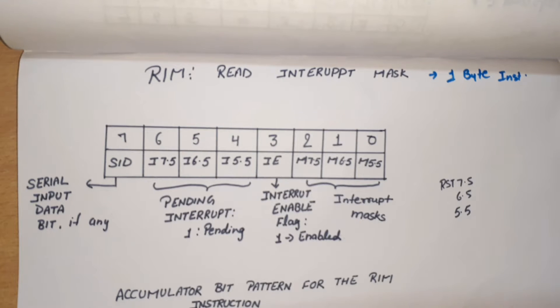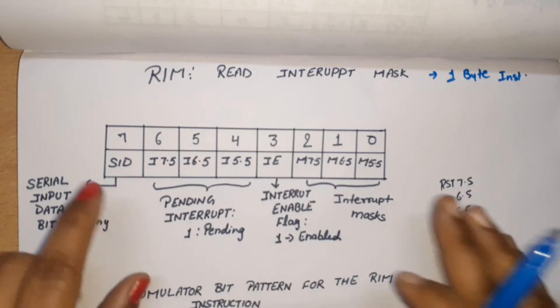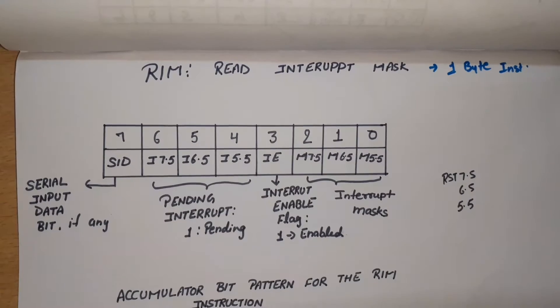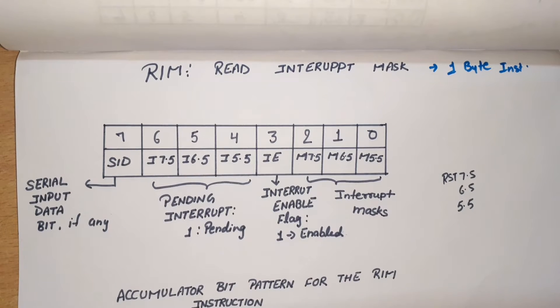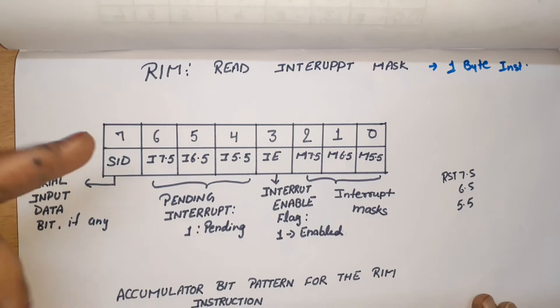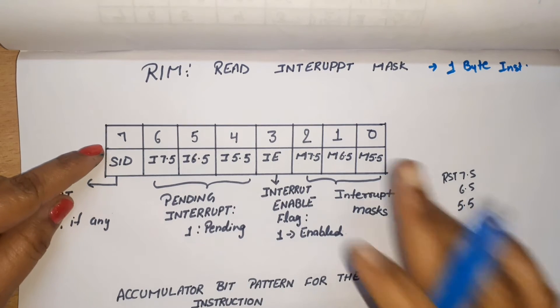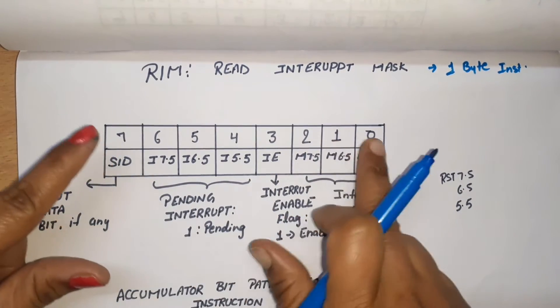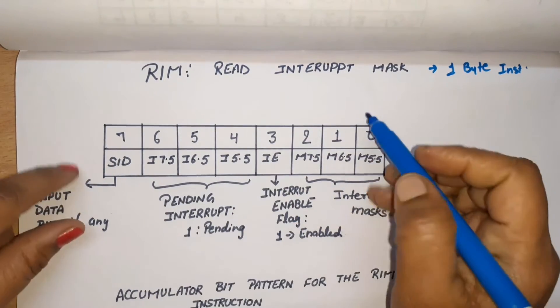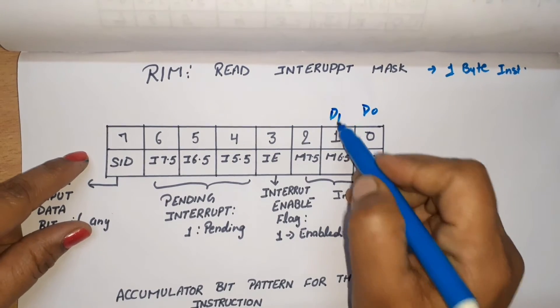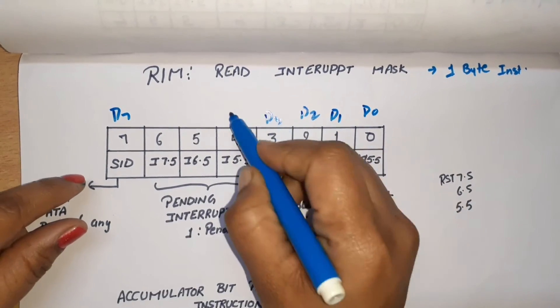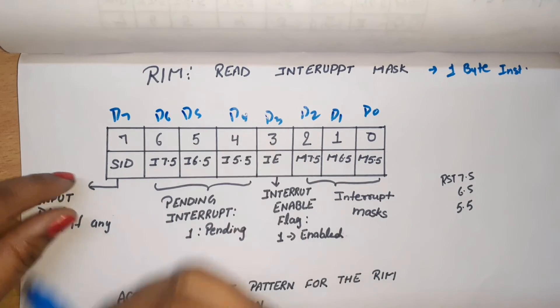I will explain all functions one by one. This is the content of the accumulator. When we write the RIM instruction in a program, RIM basically reads these contents. Starting with the MSB bit, the accumulator is an 8-bit register, so I have 8 bits: 0, 1, 2, 3, 4, 5, 6, 7. You can write D0, D1, D2, D3, D4, D5, D6, D7.